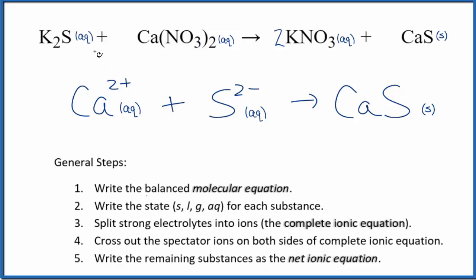This is Dr. B with the balanced net ionic equation for K2S plus Ca(NO3)2. Potassium sulfide and calcium nitrate. Thanks for watchin'.